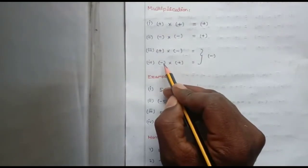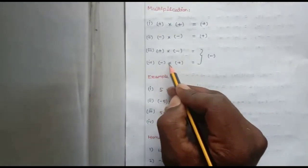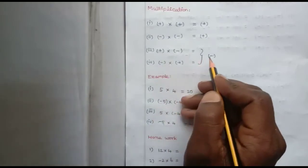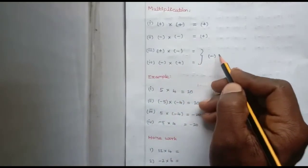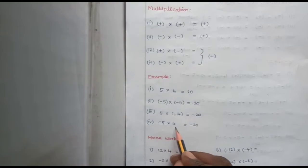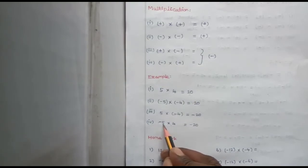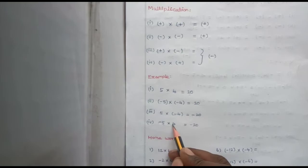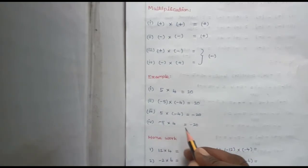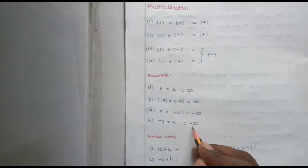The fourth one: when we multiply a negative integer and a positive integer, we get a negative integer. For example, minus 5 into 4 — 5 is a negative integer, 4 is a positive integer. Minus into plus gives minus, so 5 fours are 20. We get the answer minus 20, a negative integer. This is homework for all students.